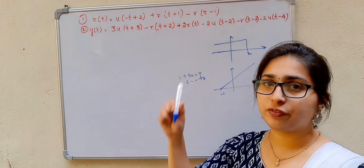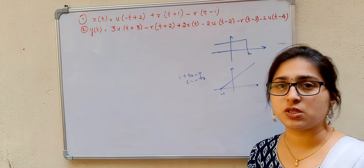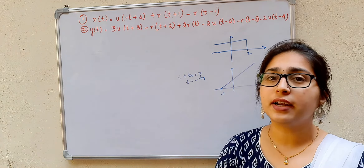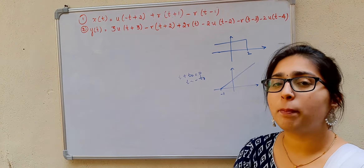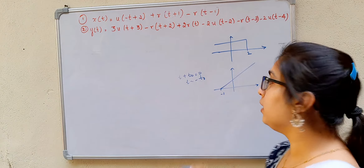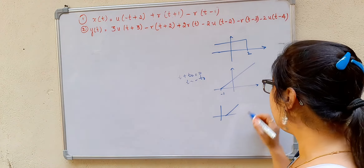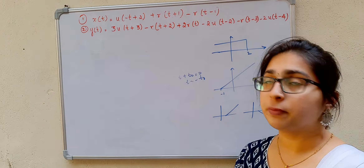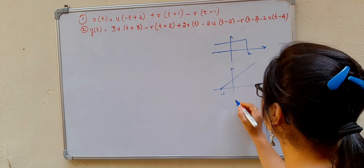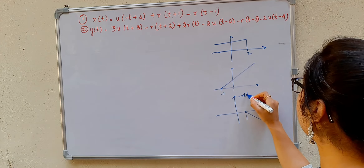When we consider -r(t-1), r(t-1) is the delayed ramp function, but it is having a slope of minus 1. That means you are doing an amplitude reversal. You have r(t-1) going in one direction, but if you multiply the amplitude by minus 1, you get it in the reverse direction. So the slope is minus 1, and from t=1 you have it going downward. This is your -r(t-1).